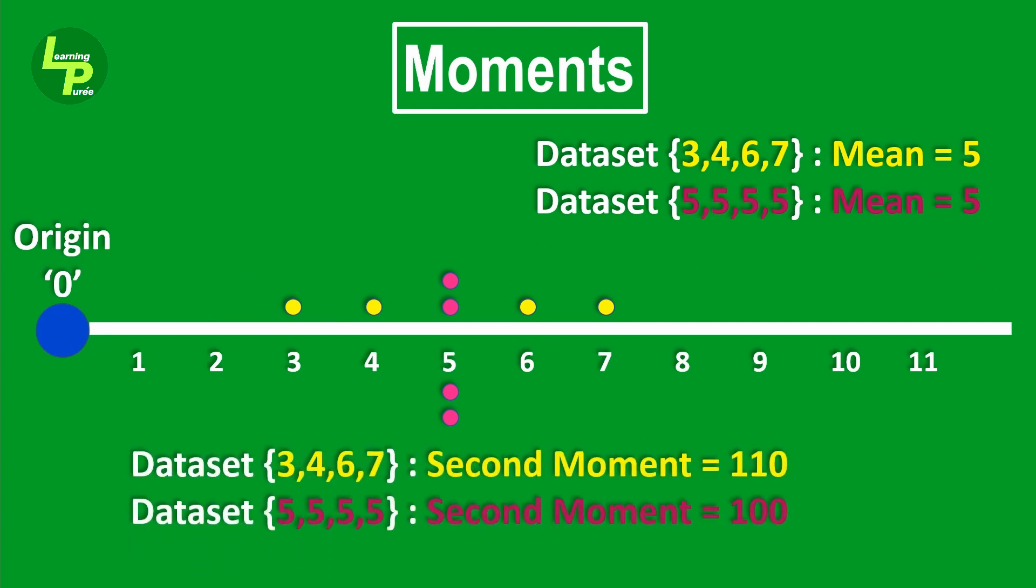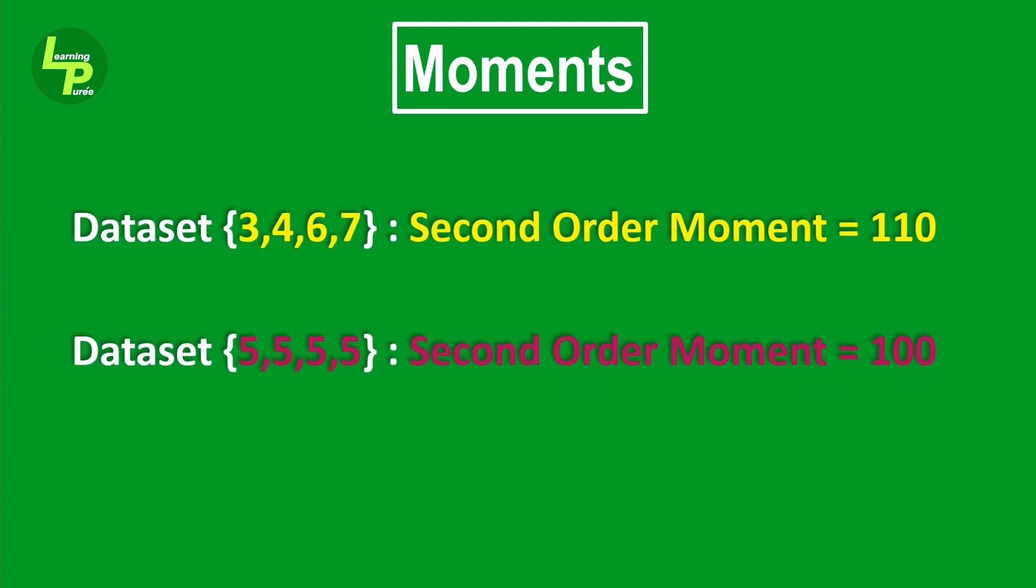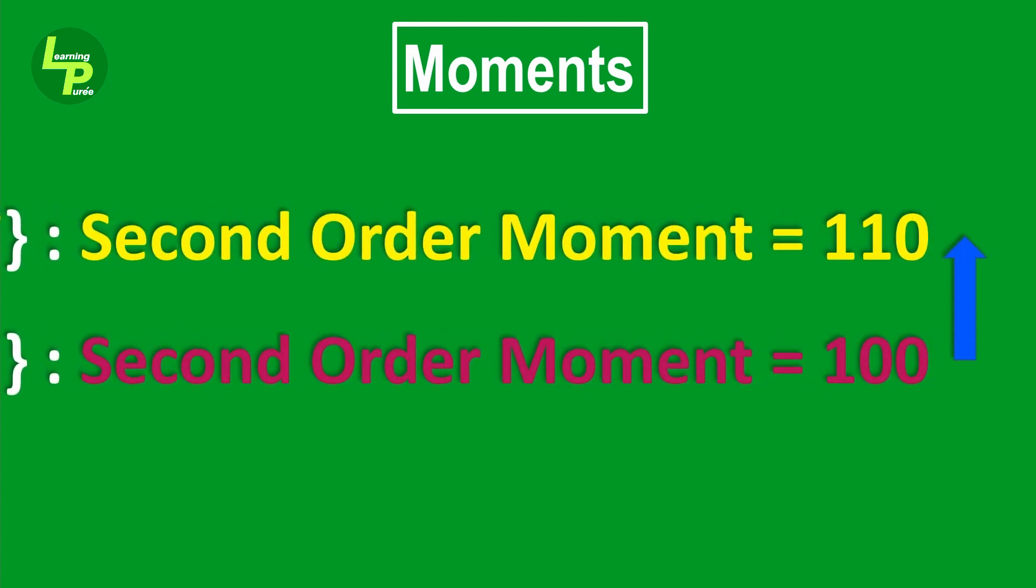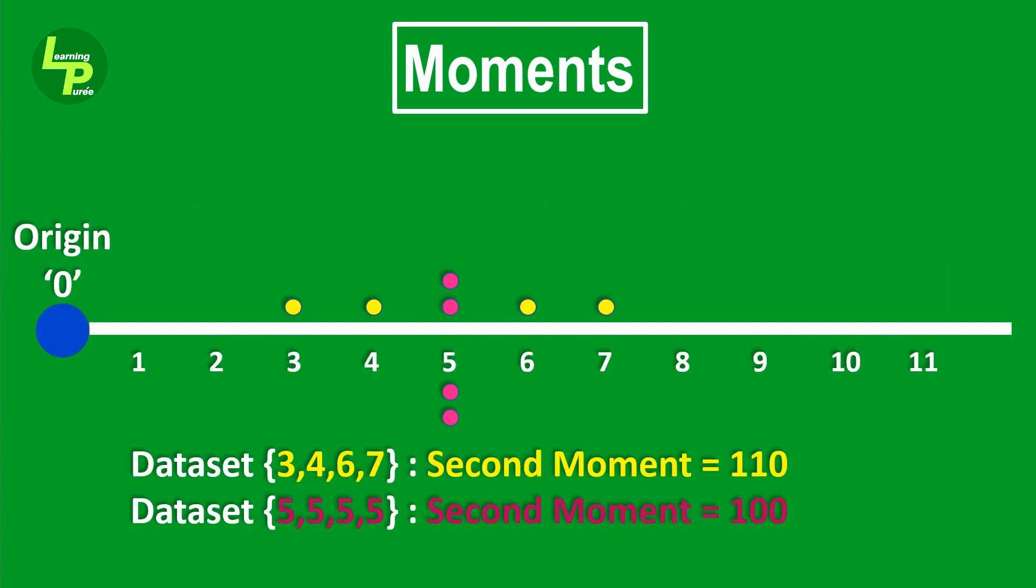The second moment gives us the following figures for the two data sets. The squared distance for the first data set increases as against the second data set. This is because the data for the first data set is spread over the line and any distance more than 5 influences the outcome.